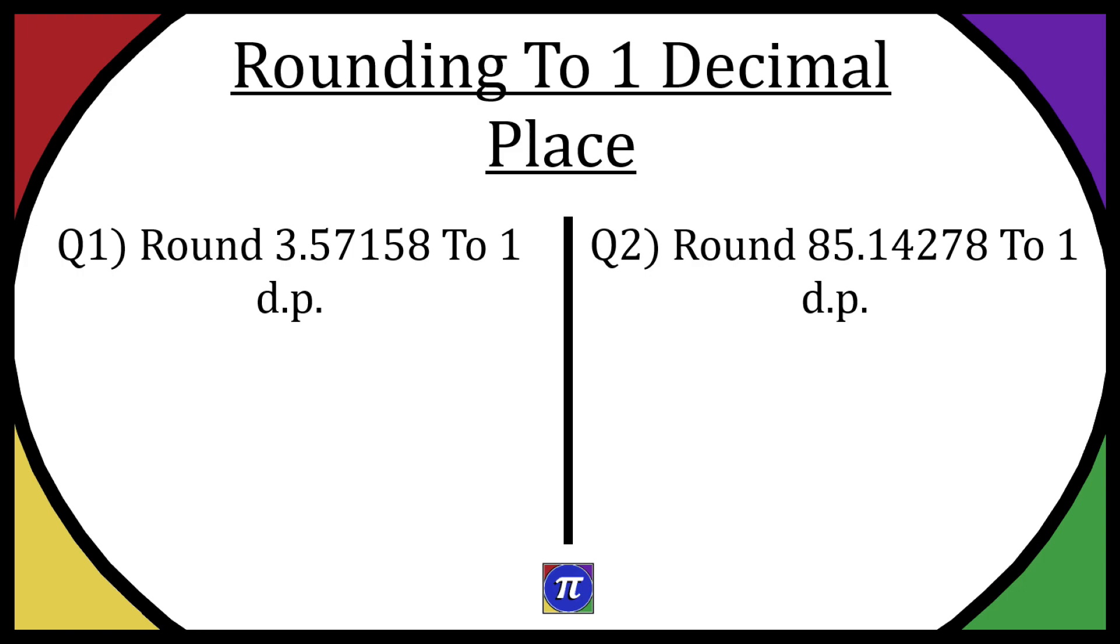First of all, the first number after the point, that's going to be to one decimal place. So here we have a five, that's one decimal place in. Now depending on whether you round this up or down is dependent on the following figure. For example, in this case we have a seven afterwards.